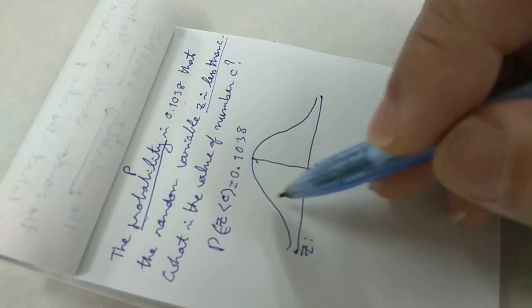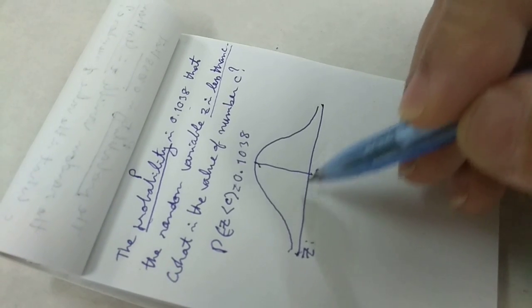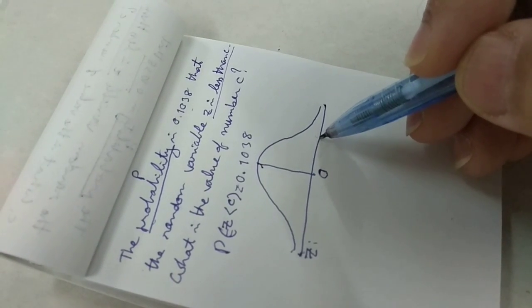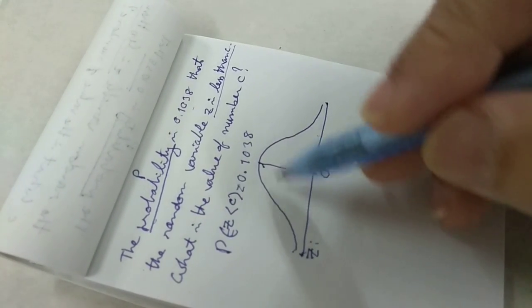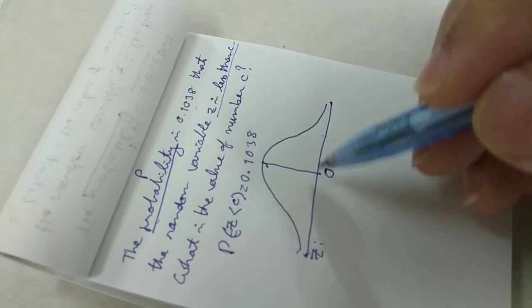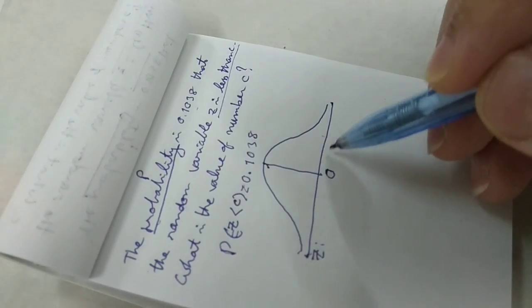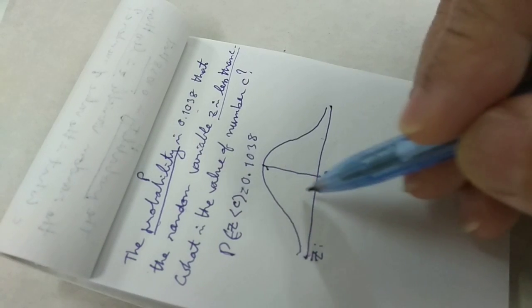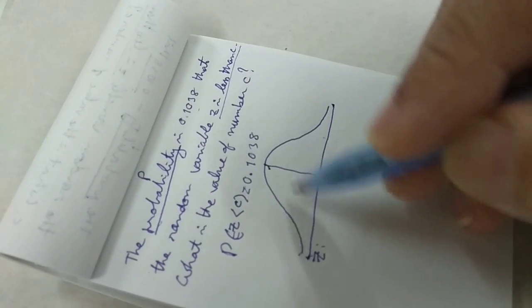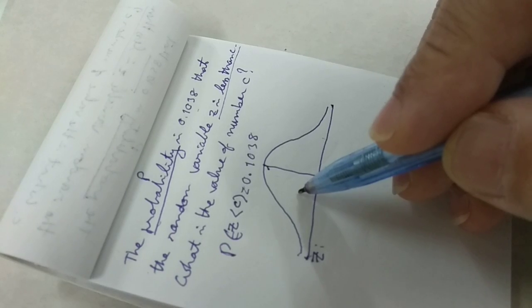If C is on the right, then the probability P, the area on the left of C, would be big, bigger than 0.5.